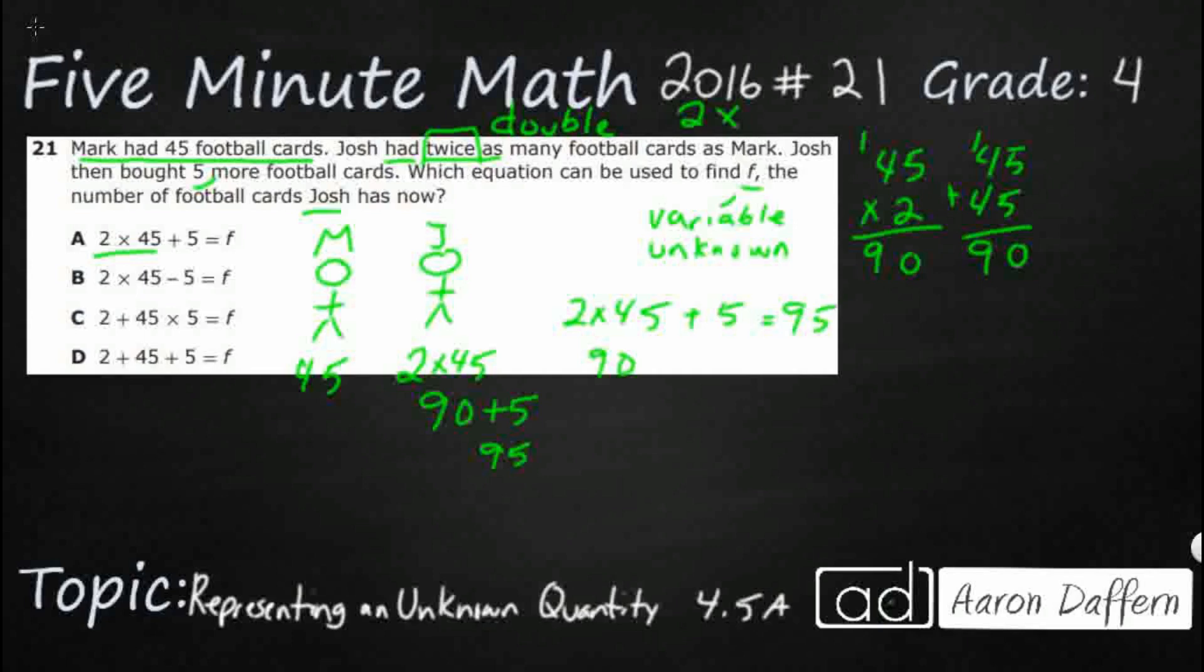Let's check the other ones. So on B, we at least double the 45, which we're supposed to, that's 90. But then we subtract the five. And you see, it says that Josh is the one that had twice as many football cards. And then Josh bought five more. So when you buy five more, you're going to have to add rather than subtract. That would be 85. And that's not what we're looking for.